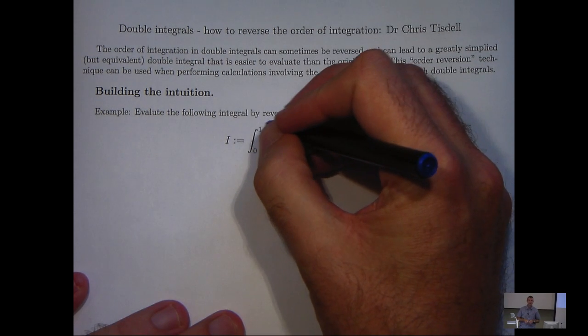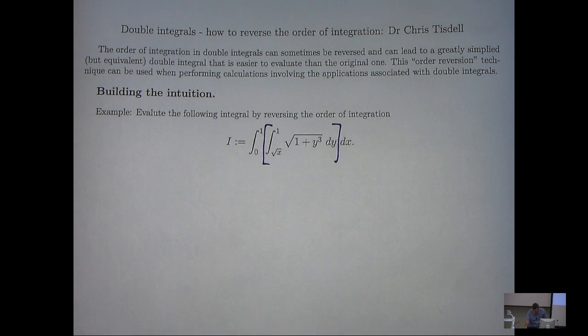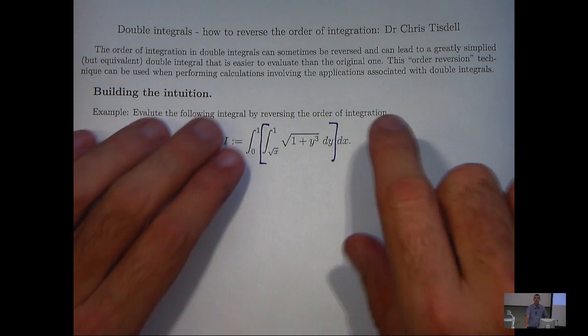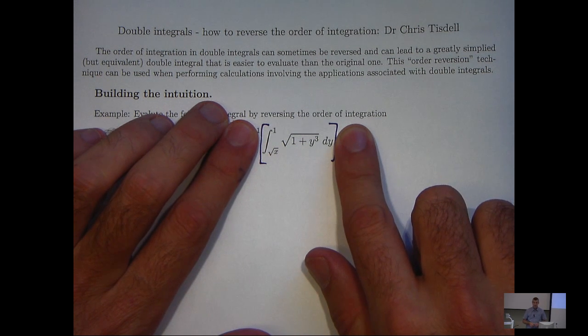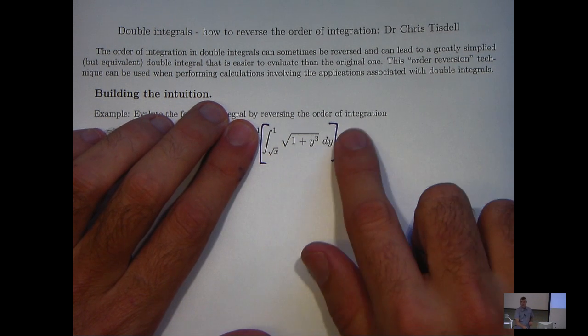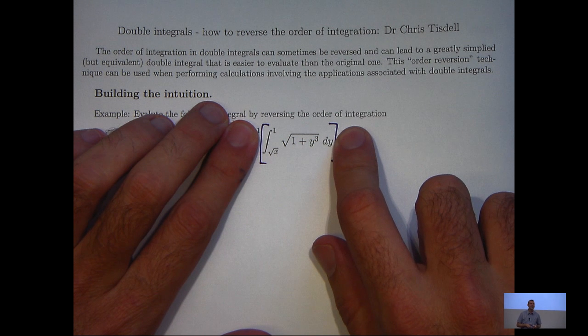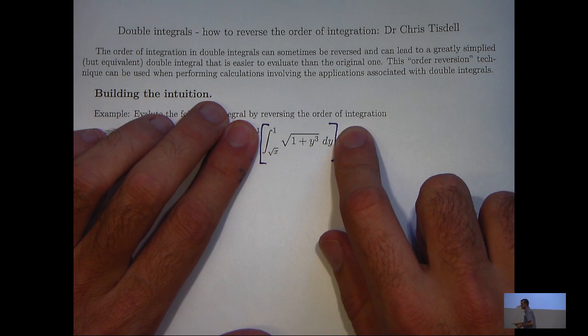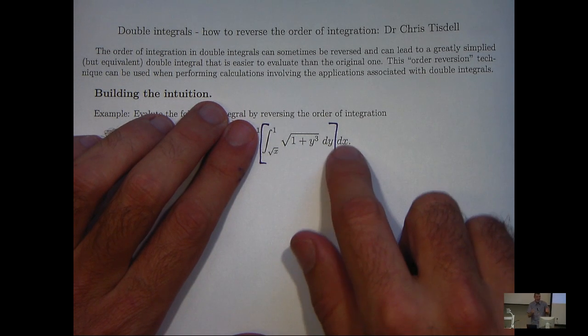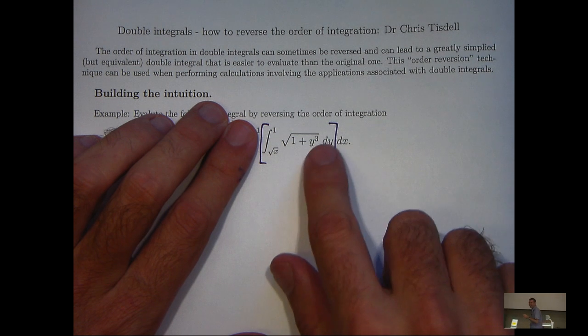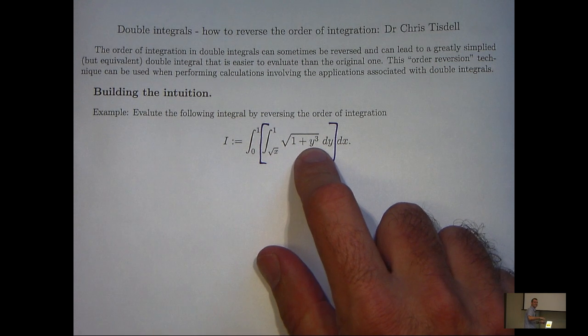Well, if you look at the double integral here in this example, and you try the usual technique of starting with the inside integral first and evaluating that, we're immediately stuck on this integral because we're trying to integrate this root 1 plus y cubed with respect to y, and that's very difficult if not impossible in terms of elementary functions. However, if this dx and dy were switched around, it's very easy to integrate root 1 plus y cubed with respect to x.